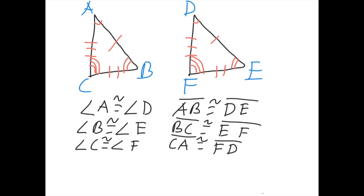So, how would you write a statement saying that these two triangles are congruent? Let's name the first triangle — we'll name it triangle ABC. To do this correctly, order matters. If we say triangle ABC, the order of the second one has to be the angle that's congruent to angle A, then the angle that's congruent to angle B, then the angle that's congruent to angle C.